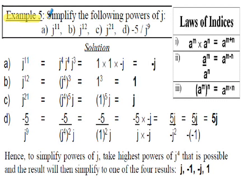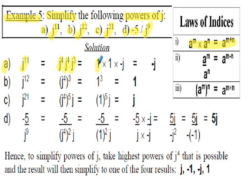Example 5: we're asked to simplify the following powers of j. Part a is j to the 11, part b is j to the 12, part c is j to the 21, and part d is negative 5 divided by j to the 9. For part a, j to the 11 can be written as j to the 4 multiplied by j to the 4 multiplied by j to the 3. j to the 4 is 1, times 1, times j to the 3 which is negative j. So 1 times 1 times negative j is negative j — j to the 11 is negative j.